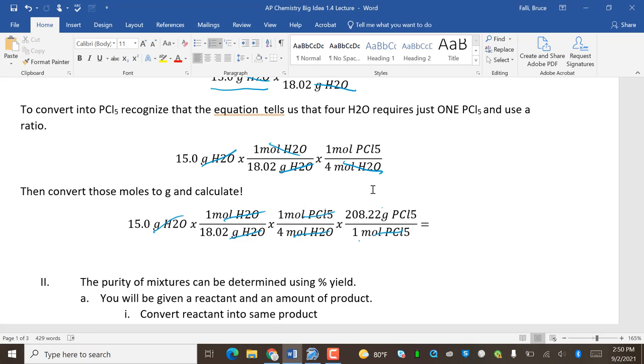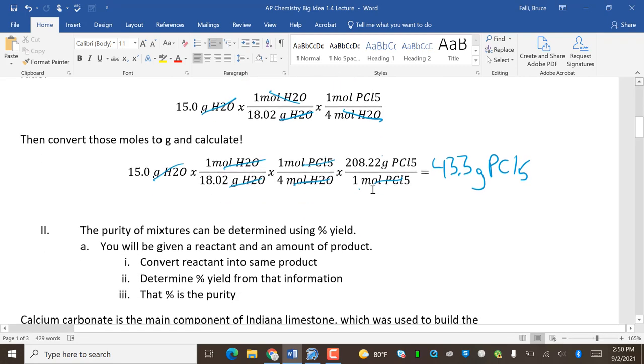One mole of PCl5 equals go to the periodic table of PCl5. So PCl5 isn't really called pickle five, it's phosphorus pentachloride. But I just really like to say pickle five. 15 divided by 18.02 divided by 4 times 208.22, I get 43.3 grams of PCl5. I think pickle might be one of my favorite words to say, along with yee-haw.